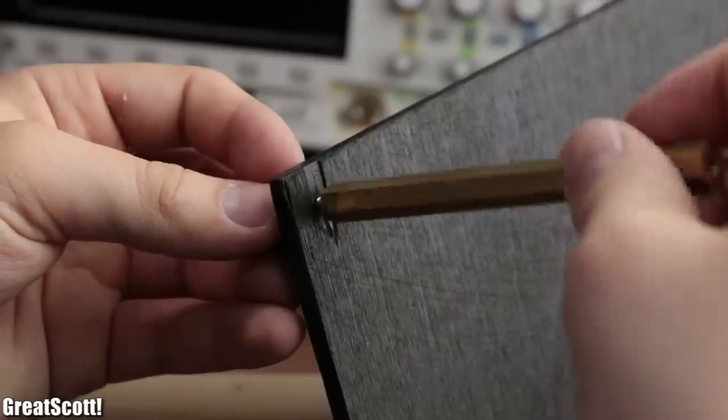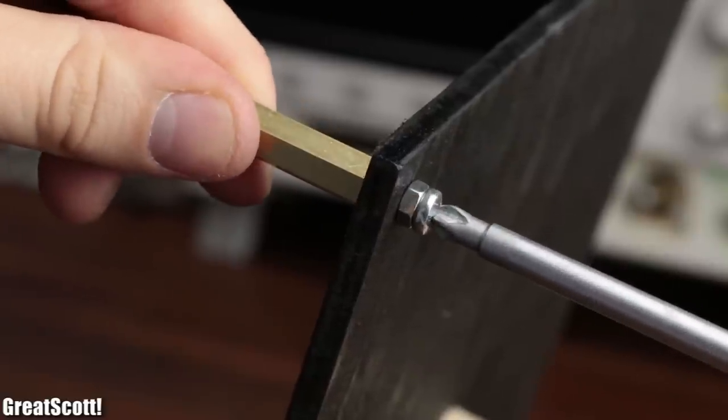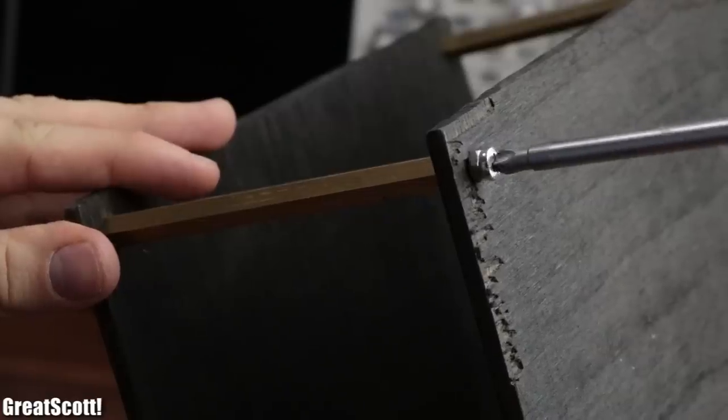Then I used 10 centimeter long brass spacers and M4 screws near the edges of the plywood pieces to mount them to one another.